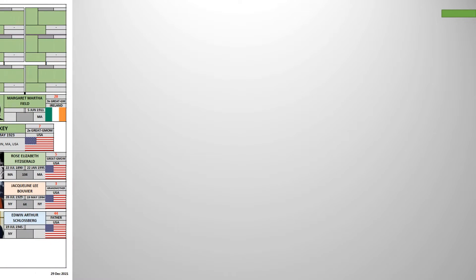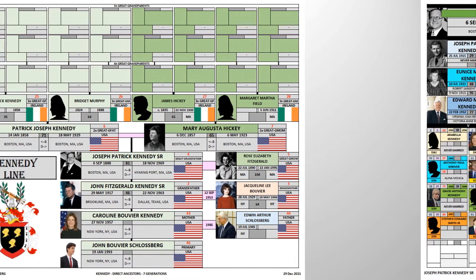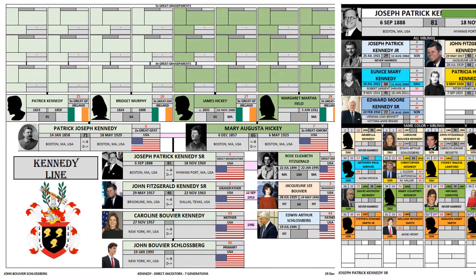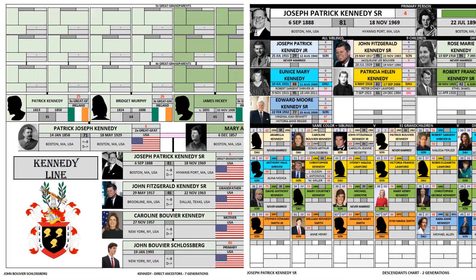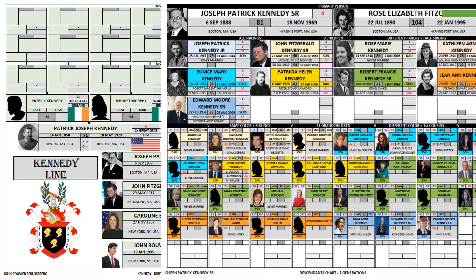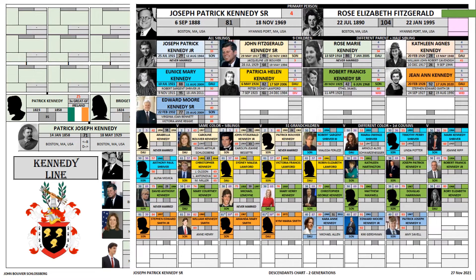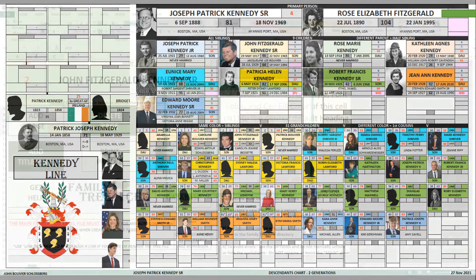You can fit up to seven generations back and two generations down, all onto one page charts using color schemes and ID numbers. You don't have to worry about tracing lines all over the pages.